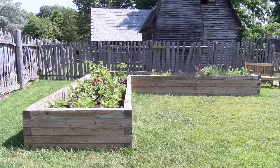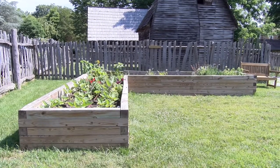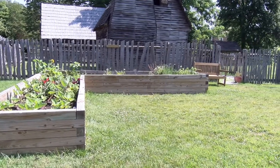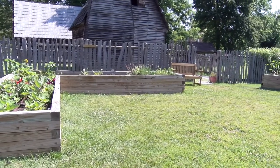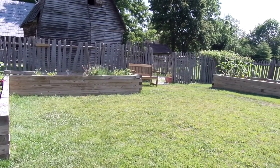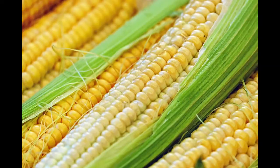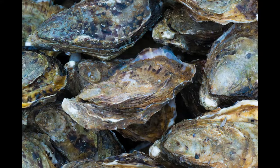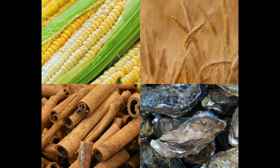In this garden, you'll see many plants. Some of them are native to America, and some of them come from faraway places. The ones we're going to be talking about today are corn, wheat, cinnamon, and oysters. Some of the things we'll be discussing is who can access these ingredients and why.